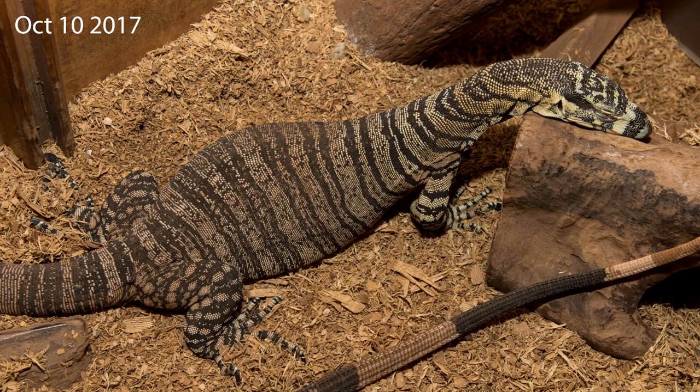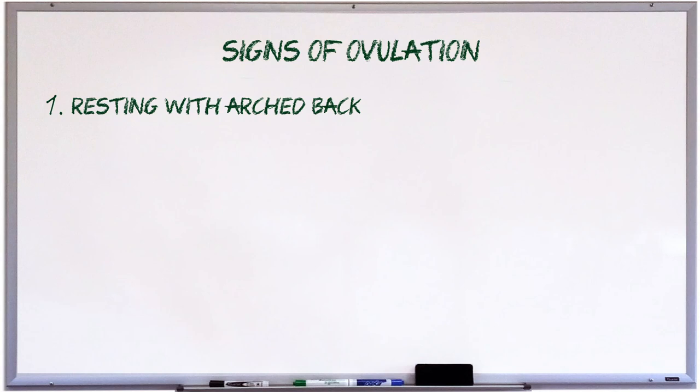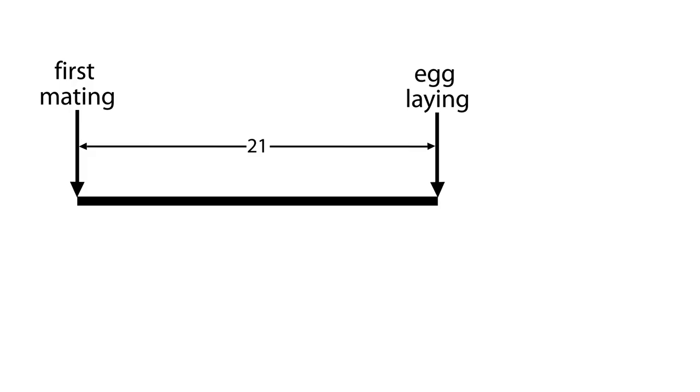Another characteristic is that — at the risk of being anthropomorphic — the female looks miserable. The first time I saw this behaviour many years ago, I thought the female was unwell and she looked as though she was in pain, often closing her eyes, as in this photograph. It was only after I'd observed it on a number of separate occasions that I recognised a pattern, as it always happened 15 to 16 days before egg-laying.